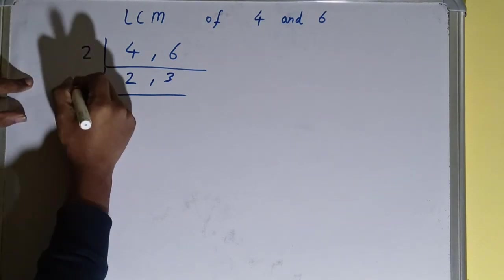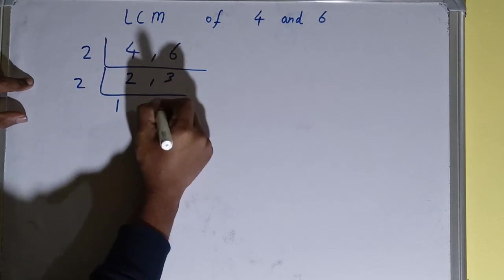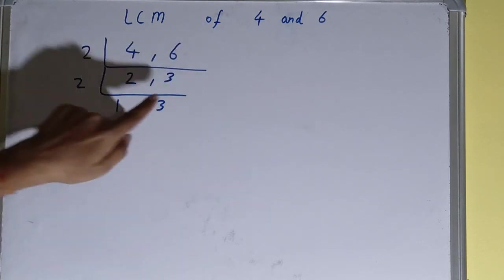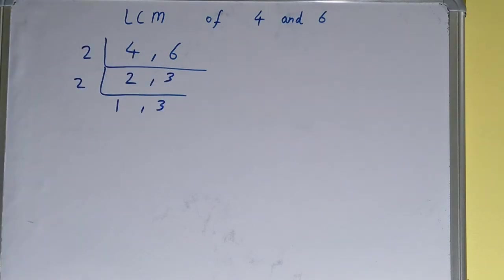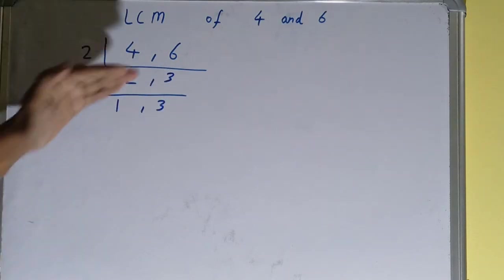Okay, so divide it. We'll be getting 1 comma 3. Now because this 3 was not divisible by 2, that's why we just copy it down. When the number is not divisible, we just copy it down.